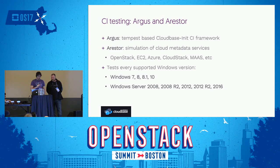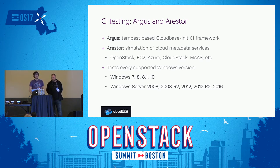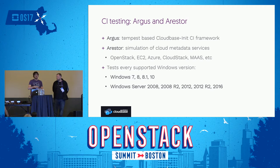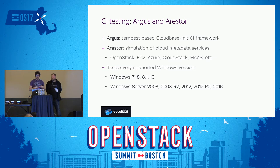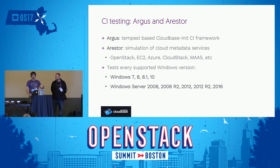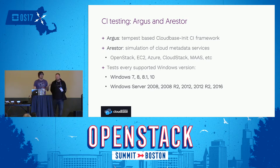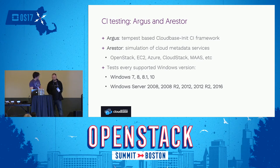Testing is fully based on a continuous integration framework based on Tempest, which uses Argus and Arrestor — names from Greek mythology — to test CloudBase Init on every possible Windows version. We test every single patch on Windows 7, 8, 8.1, and 10 twice because it's x86 and 64-bit, and then again on Windows Server 2008, 2008 R2, 2012, 2012 R2, 2016, and even Nano Server, which has a completely different surface. These tools are also run as part of our Cambridge CI facility.